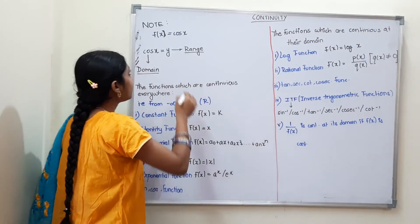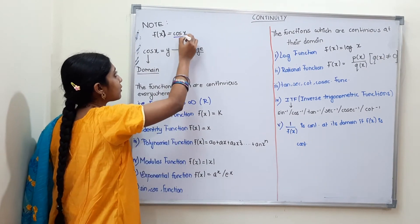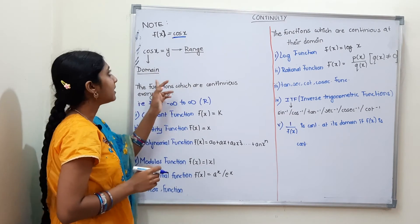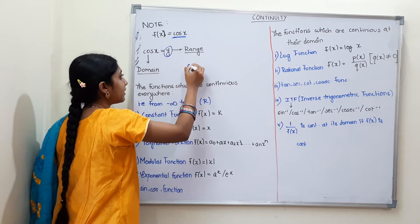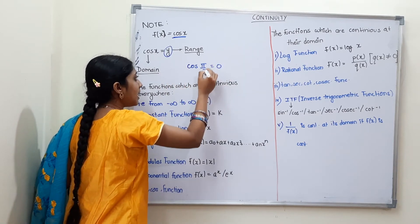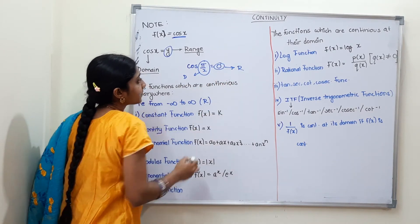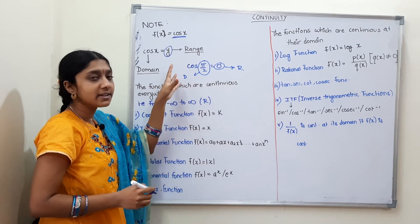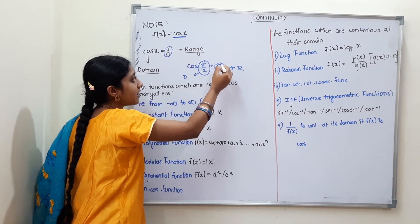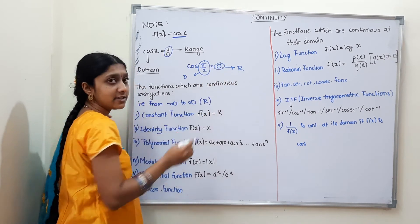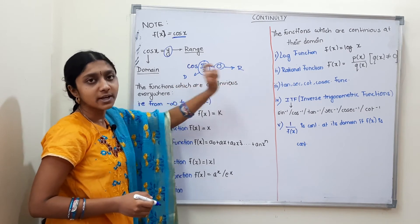For example, f(x) = cos x is a function. If we input values from the domain, we get output values. For instance, cos(5π/2) = 0. The domain is the set of input values, and the range is the final output. So domain is the input, and the range is the final output.